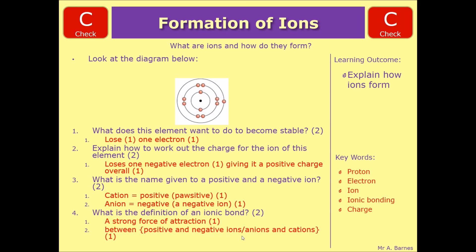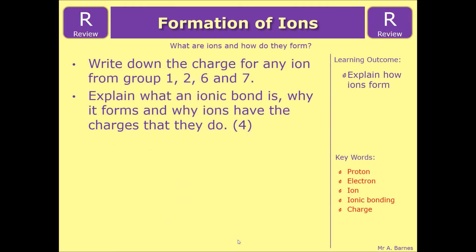Hopefully that makes sense to you now. If you're feeling confident about it, go on to the review question. It's a four marker, which says write down the charge for any ion from group 1, 2, 6 and 7. Then explain what an ionic bond is, why it forms, and why ions have the charges that they do. And that ends this video. Thank you.